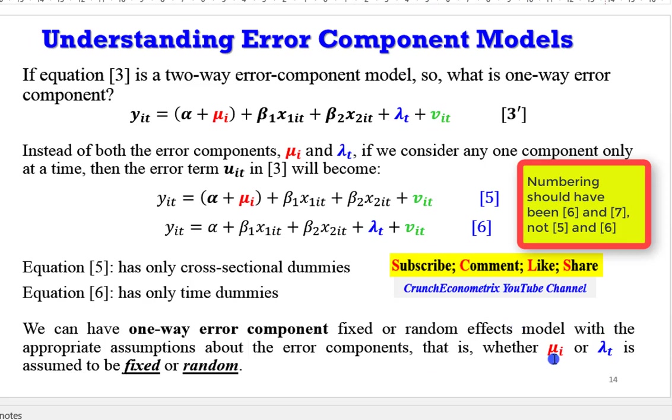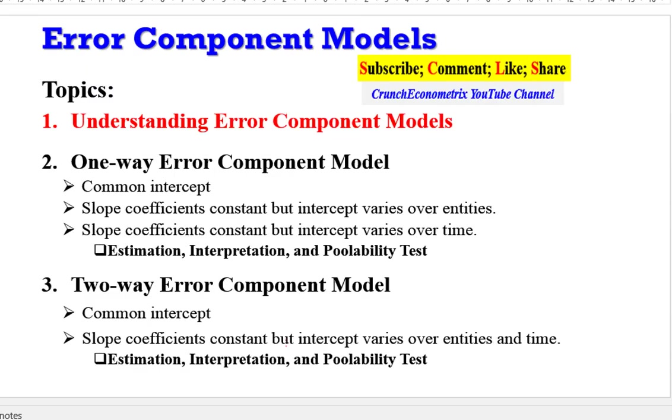That is, whether mu i or lambda t is assumed to be fixed or random. So, with this, I have given you a recap or a background information about what error component model is all about. These have been covered.